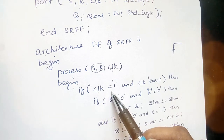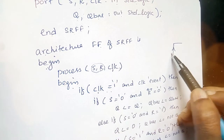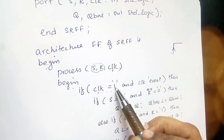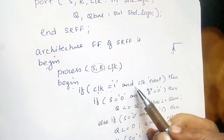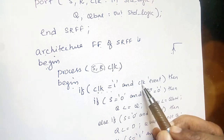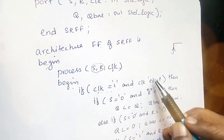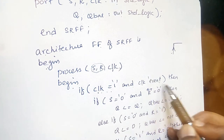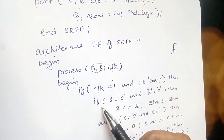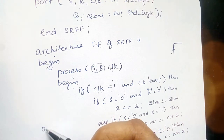We check that the clock is '1' and also that a positive edge has occurred using 'clock'event and clock = 1' to detect the rising edge.